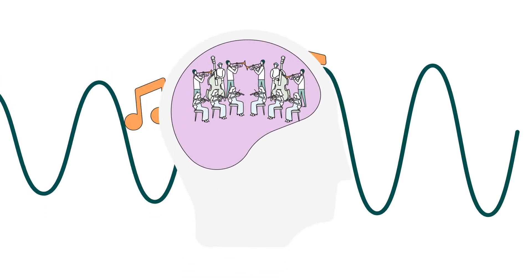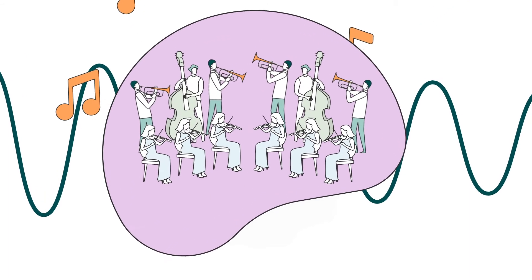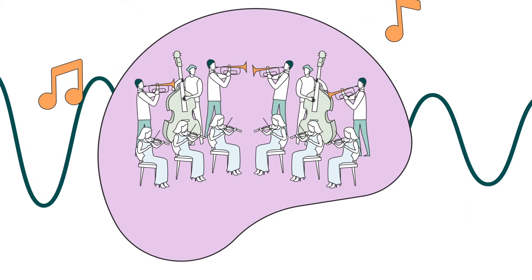Your brain is like an orchestra, full of electric signals that together play a symphony that represents our thoughts and mental state.